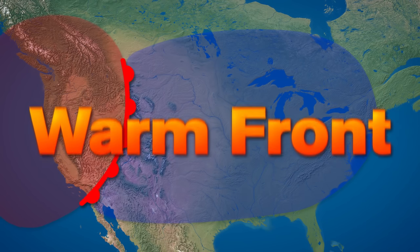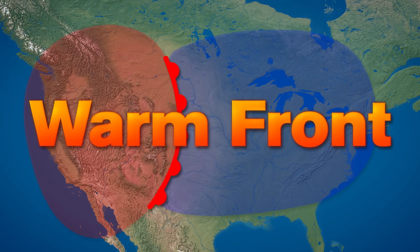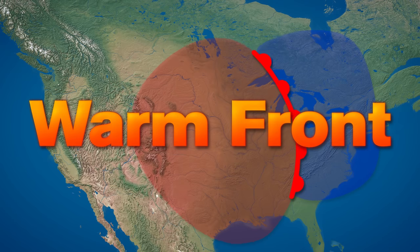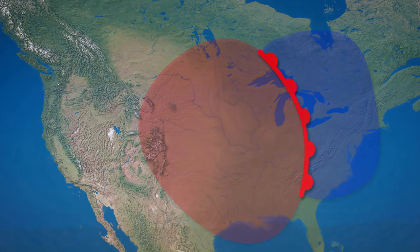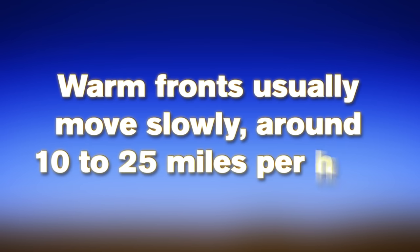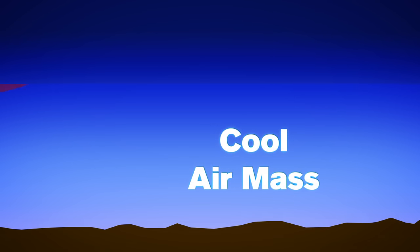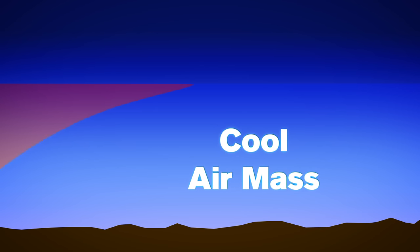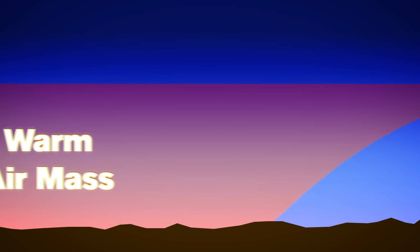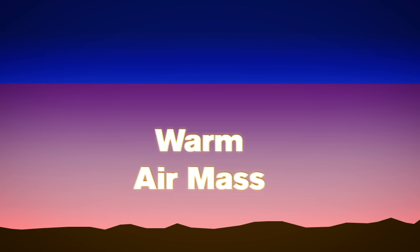A warm front occurs when a warm air mass overtakes an air mass of a colder temperature. Warm fronts usually move slowly, around 10 to 25 miles per hour, and have a gradual slope that will slide over the top of a cooler air mass and move it out of the area.